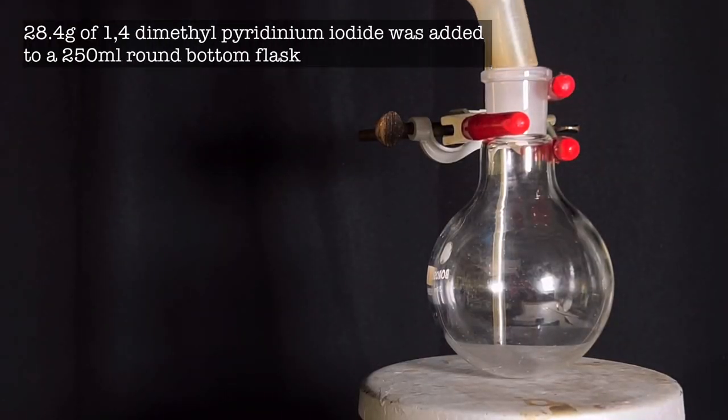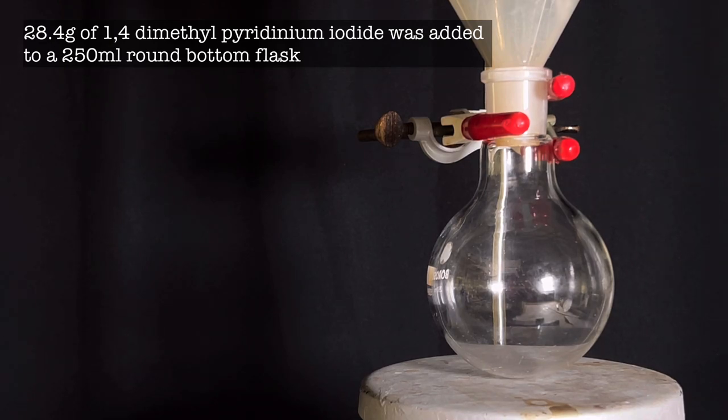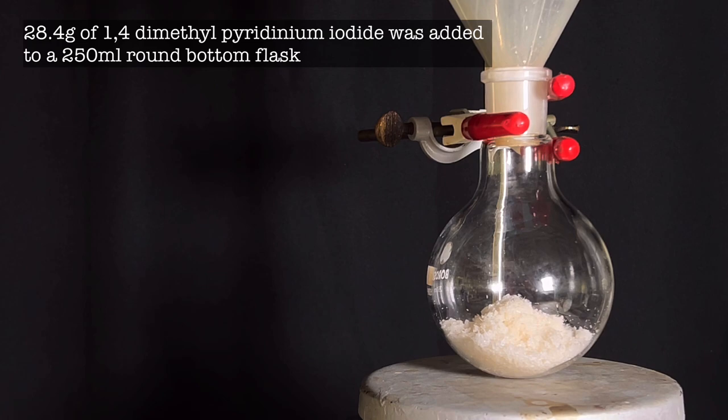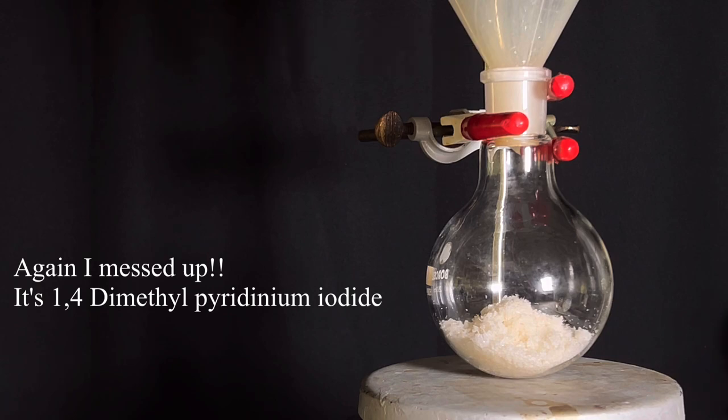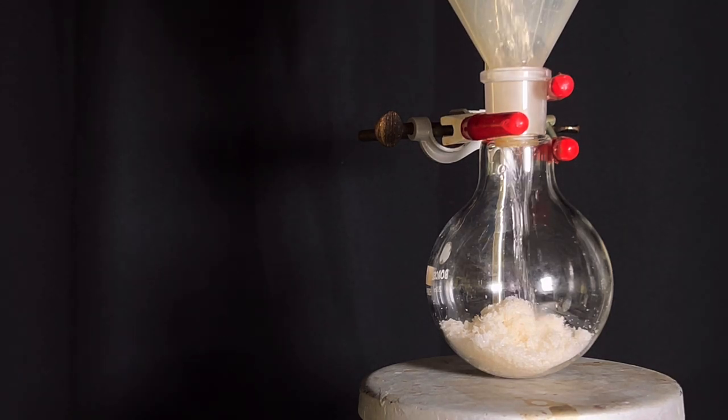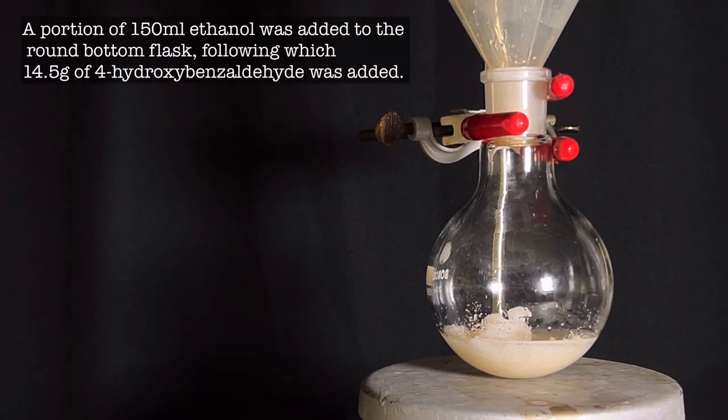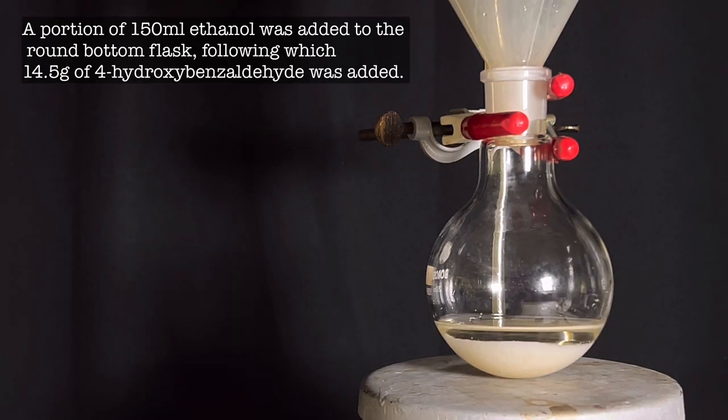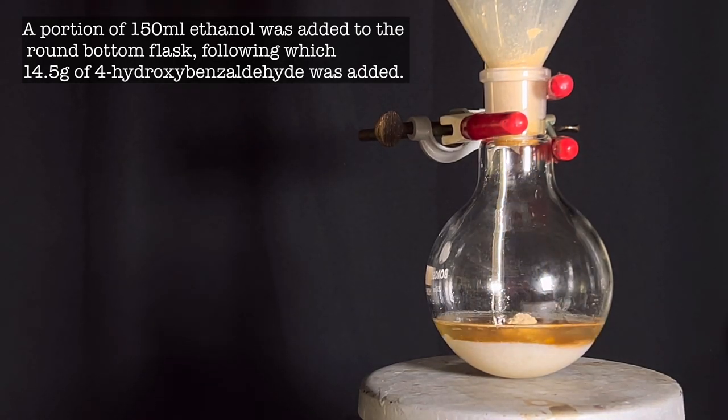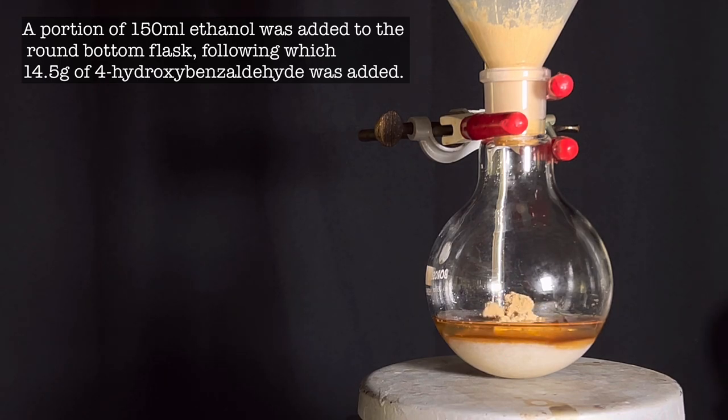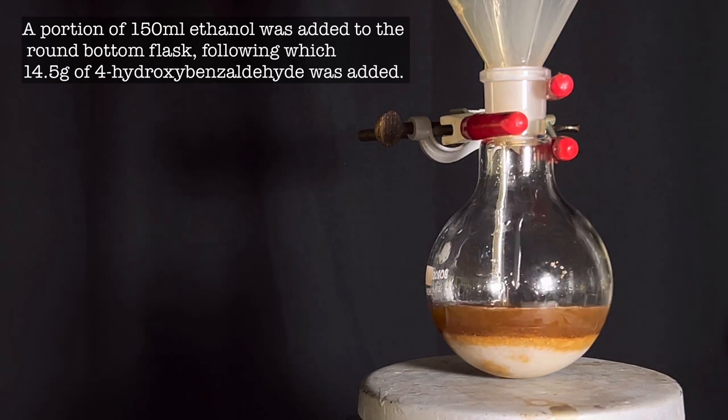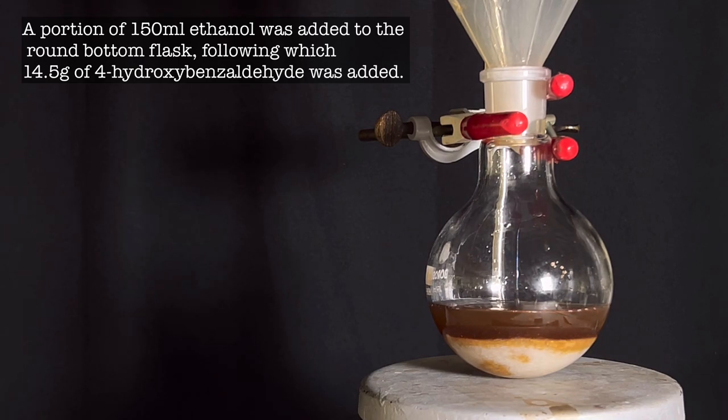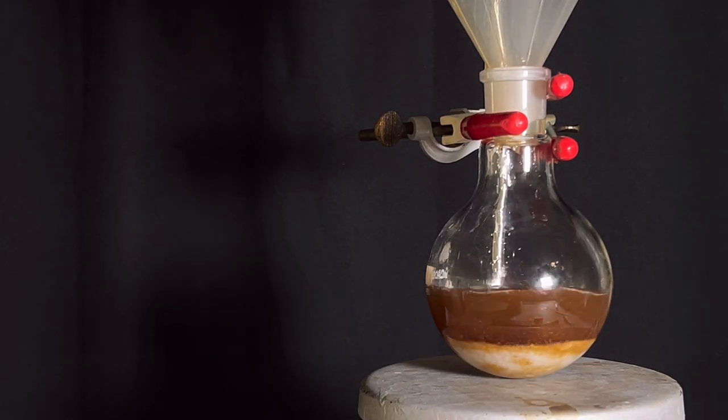Now we move on to the final part of the synthesis of MOED. A 250 ml round bottom flask was clamped and fixed on a hot plate stirrer. Using a powder funnel, 28.4 g of 1,3-dimethylpyridinium iodide was added to the flask. 150 ml of dry ethanol was added to the flask. First around 100 ml was added and then 14.5 g of 4-hydroxybenzaldehyde was added to the flask. Then the remaining ethanol was added to wash down the 4-hydroxybenzaldehyde stuck on to the funnel.